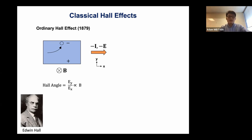One way to gauge the strength of this effect is to define a Hall angle or Hall ratio, essentially taking the ratio of the generated transverse field over the field that we apply. This is defined somewhat differently depending on the literature — sometimes it's field over current, sometimes you see a tangent — but for simplicity I'll define it this way. Unsurprisingly, it's proportional to the magnetic field that you apply.